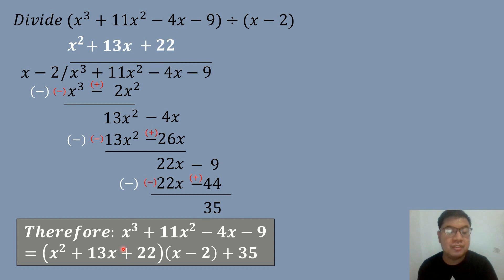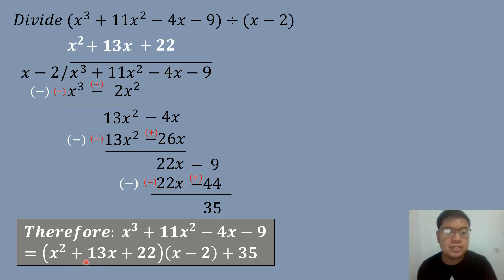Therefore, if we write it in division algorithm form, the dividend X cubed plus 11X squared minus 4X minus 9 equals the quotient X squared plus 13X plus 22, times the divisor quantity X minus 2, plus the remainder 35.